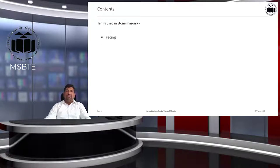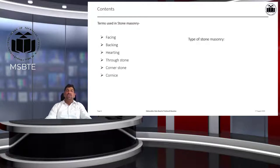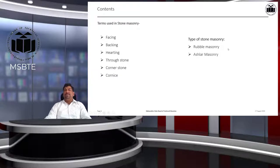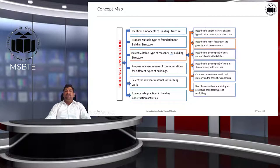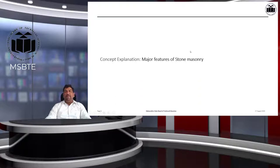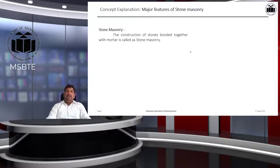The content we are going to study includes: facing, backing, hurting, through stone, cornerstone, and cornice — these are the nomenclatures used in stone masonry. After that, we will study the different types of stone masonry: rubble masonry and ashlar masonry. In the concept map for building construction, we are now on the second stage — describing the major features of the given type of stone masonry.